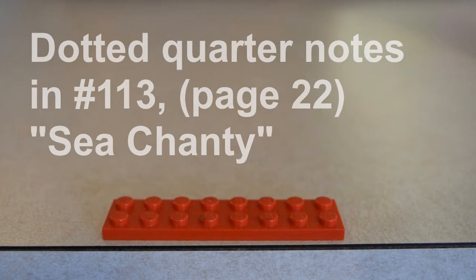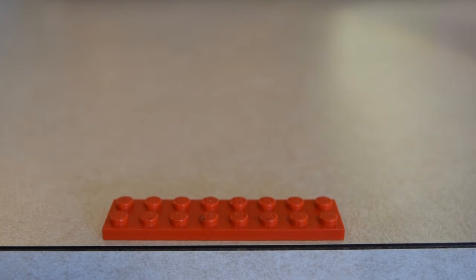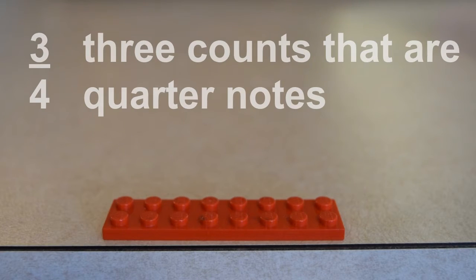Next, I'd like to look at number 113 in the book, which is Sea Shanty. The interesting thing about this one is that it is not in 4-4 time, it is in 3-4 time, meaning that there are three quarter notes, or three counts, per measure.